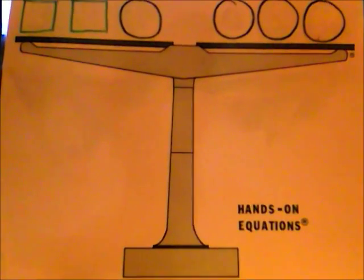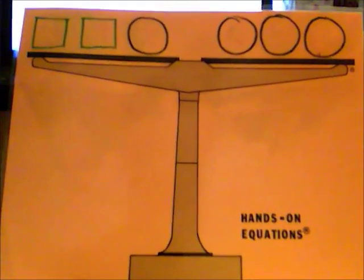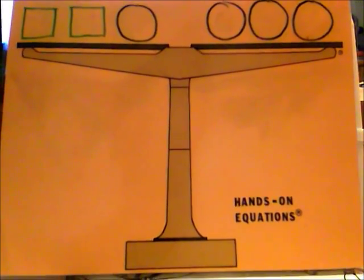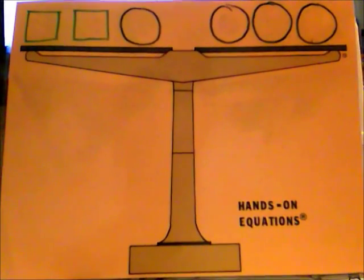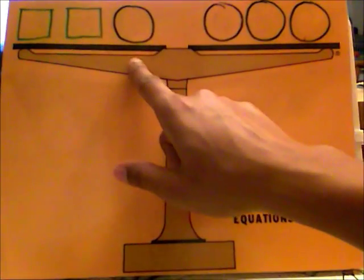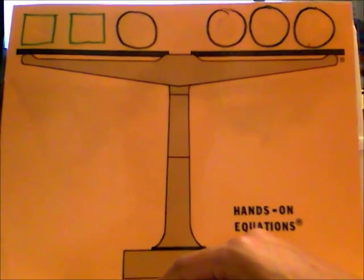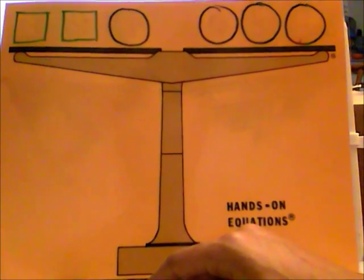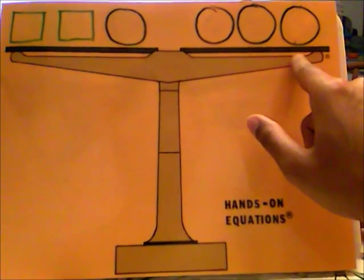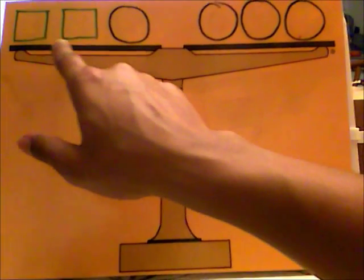This video is all about modeling and balancing equations. I have a balance beam — some of us can think of it as a seesaw. There are two sides: the right hand side and the left hand side. On the right hand side of the seesaw I have three circles, and on the left hand side I have two squares and a circle.